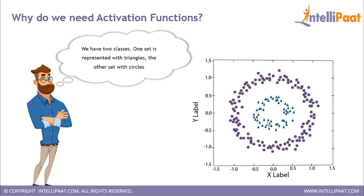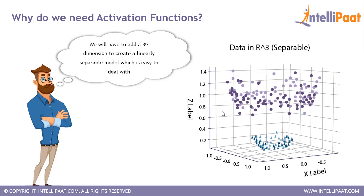Now let's see why we need activation functions. Consider a scenario where you have two different classes — one represented with triangles and the other with circles. If you try to draw a linear decision boundary to separate these two classes, that is not possible. We need to add a third dimension to create a linearly separable model. The logic is: when going from 2D to 3D, you're making your equation nonlinear — introducing nonlinearity which helps in creating a linearly separable model.